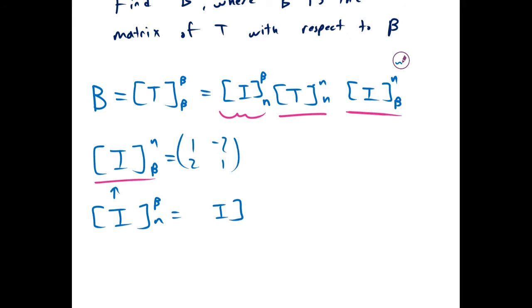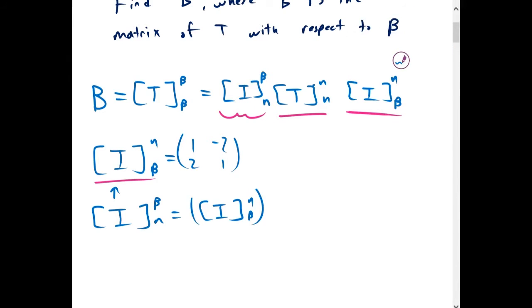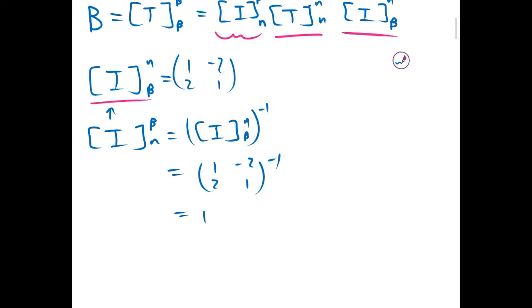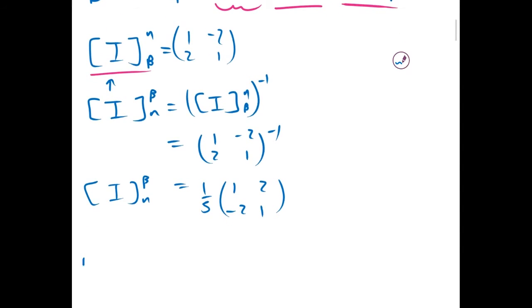This actually ends up being the inverse of what we just found — the inverse of the identity from the normal basis to the beta basis. So if we take the inverse of [1,2; -2,1], we get (1/5)[1,-2; 2,1]. Now we have all three matrices we need to find B.